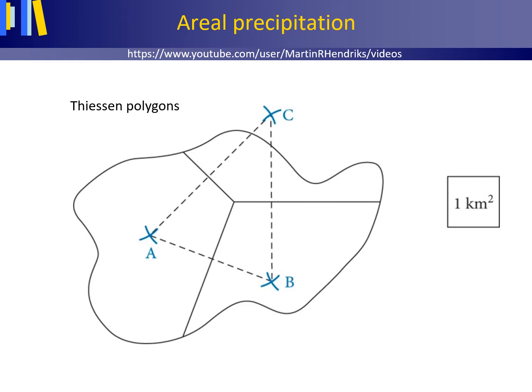For estimating the aerial precipitation, the arithmetic mean precipitation depth or the use of Thiessen polygons may then suffice. Here we have an area under study for which we have three rain gauges, A, B, and C, with C lying just outside of the area under study.